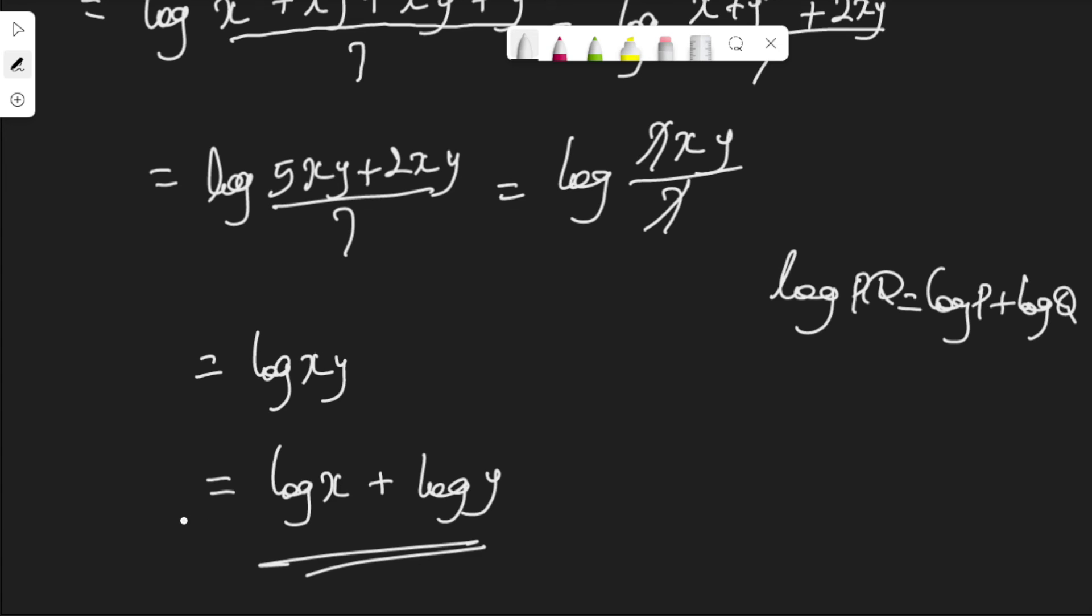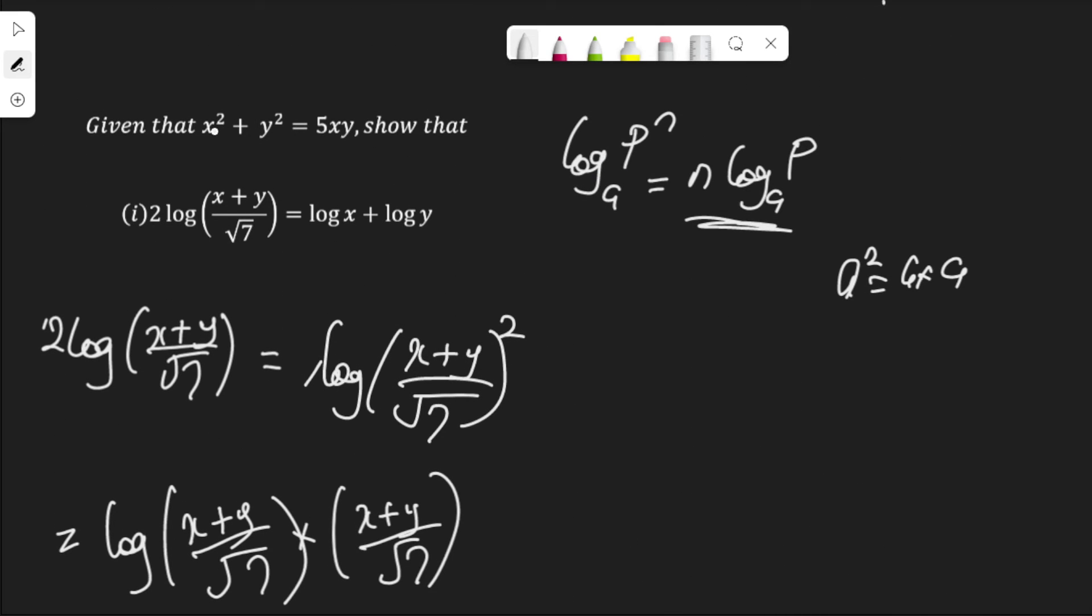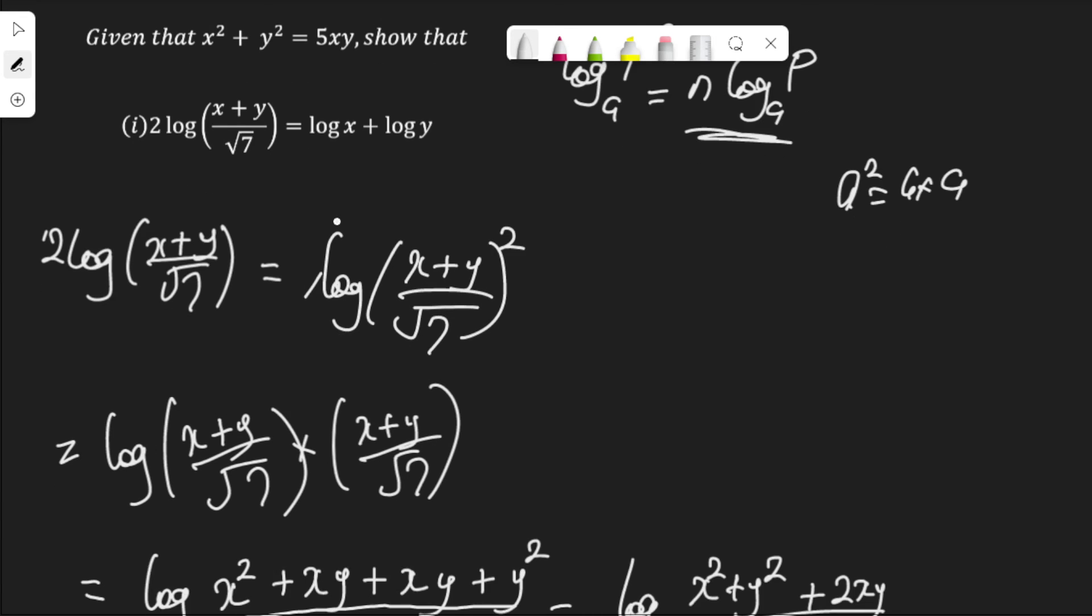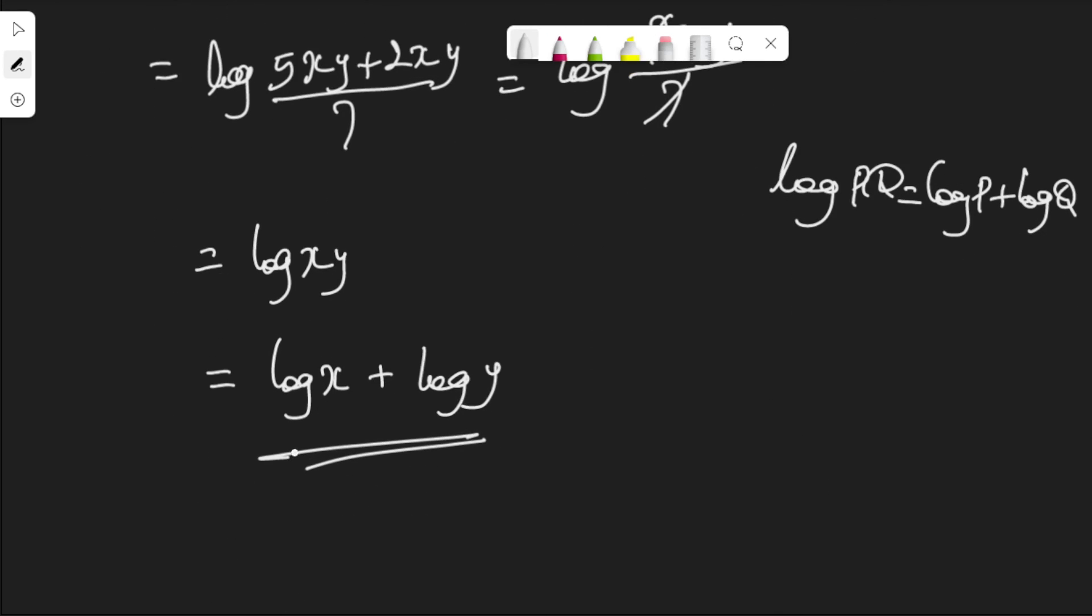And, this is what we have shown here. This is what they asked us to prove. Given that x squared plus y squared is equal to 5xy, show that 2 log (x plus y) over root 7 is equal to log x plus log y. And that is what we have done here.